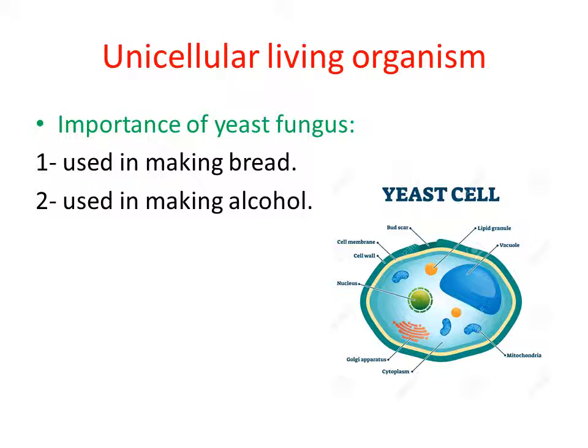Let's talk about the unicellular living organism and take as an example the yeast fungus. The yeast fungus consists of four main parts: the outer cell wall, a nucleus, cytoplasm, and a large vacuole. The yeast fungus is used in making bread and alcohol.